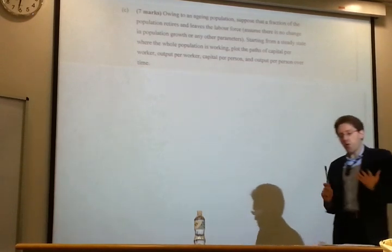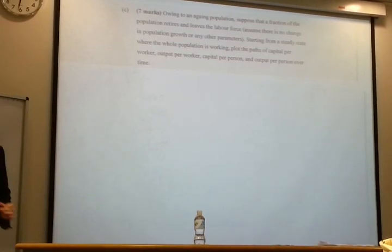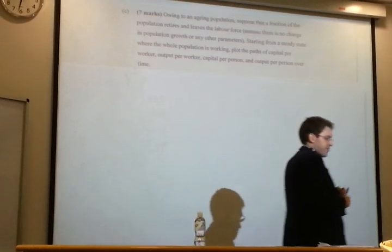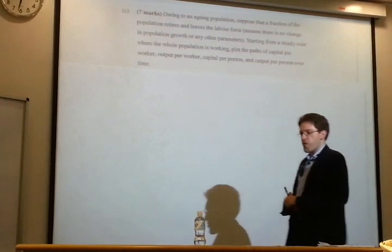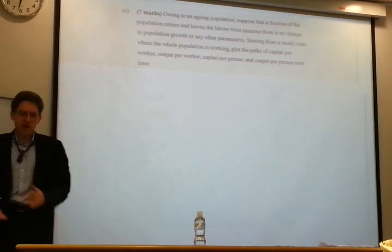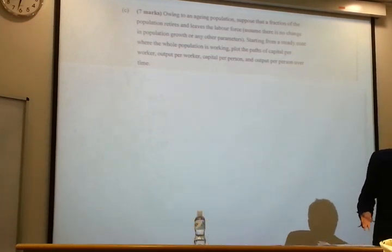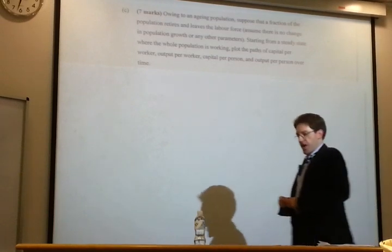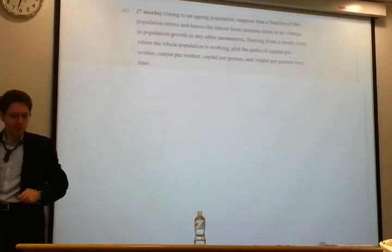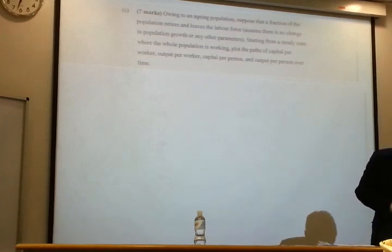So in your standard Solow model, population and labor force are treated as identical. Here, we're going to have some fraction of the population get out of the labor force due to retirement. So suppose previously there was no retirement, then the government brings in a law that says you have to retire when you reach a certain age. That would be the easiest, rather extreme, but that would be the easiest case to consider.